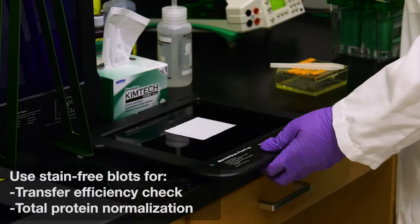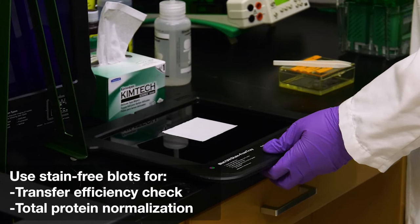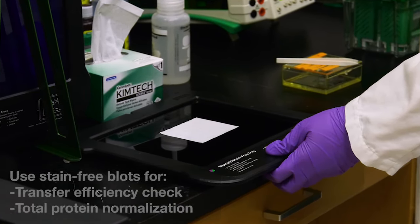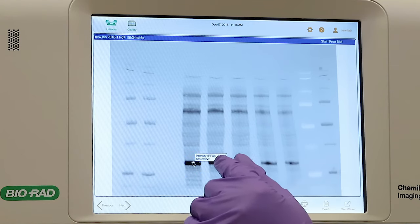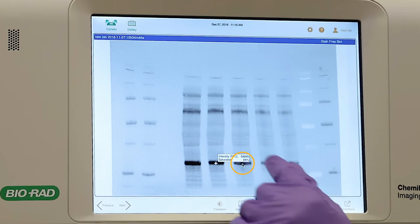If blotting, stain-free gels can be visualized on the membrane and serves as both an effective transfer efficiency check and total protein stain. For a rapid look at the band intensities, you can tap each band and the relative fluorescence units as well as percentage saturation will appear.